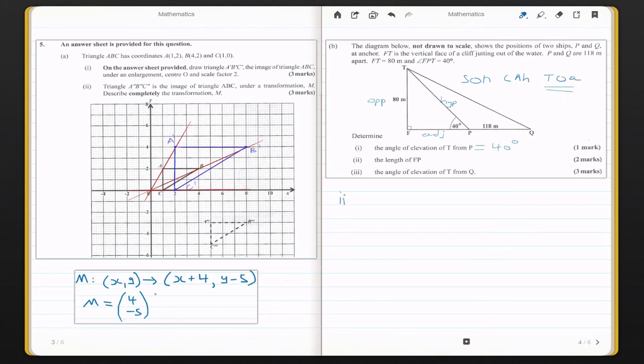So part two. Tan 40 degrees is going to be equal to 80 over FP. If you want to find FP, that will be equal to 80 divided by tan 40, which is going to be 95.3 meters. That's our answer for part two.